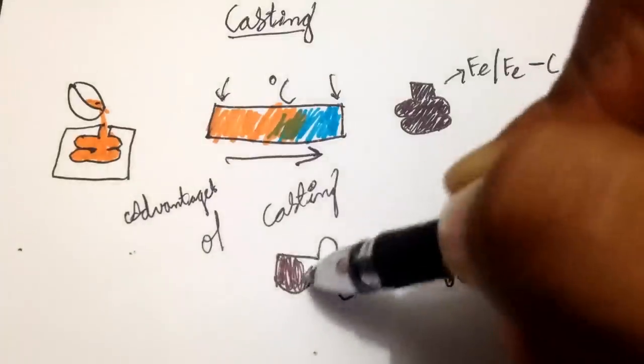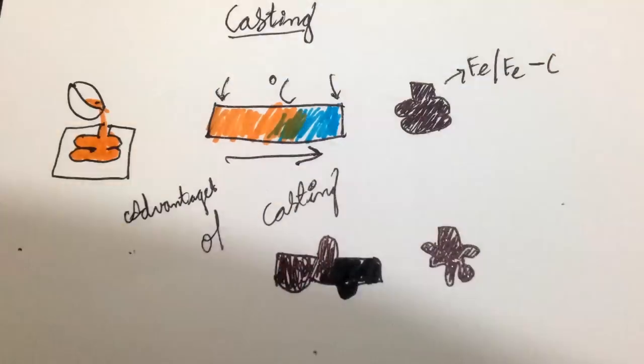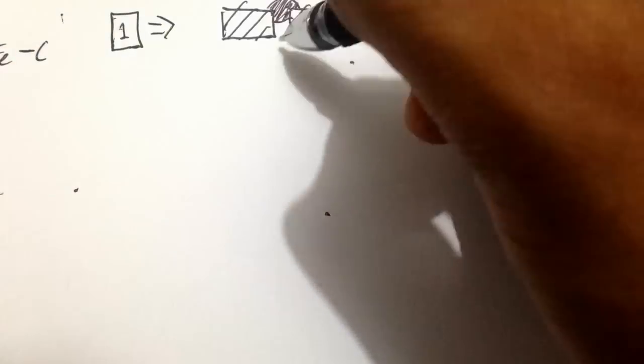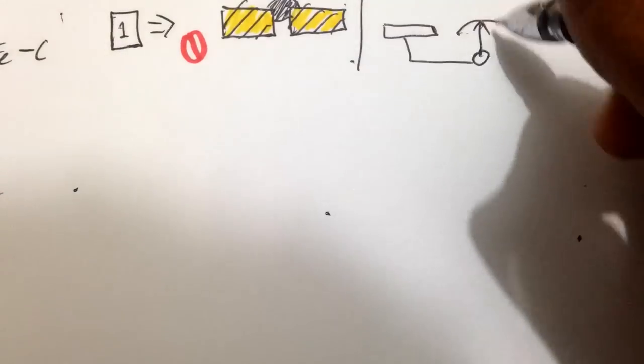Casting can be used to produce complex and economical shapes which are difficult to produce by other processes. Important output in casting is one piece and hence no metal joining processes are needed. Very heavy parts that are normally difficult to fabricate can be easily manufactured by casting. It also produces machinable parts.